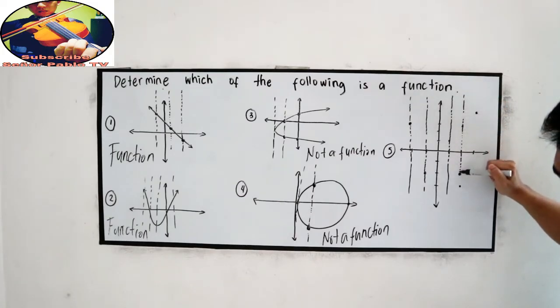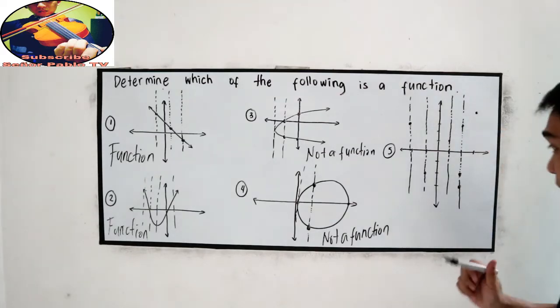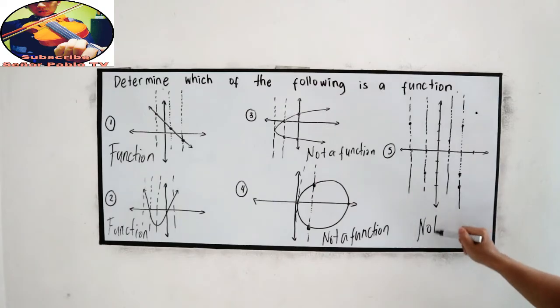So let us check the vertical line test: one, two, three. So this is our points. So we touch just three points in a row, so that is not a function.